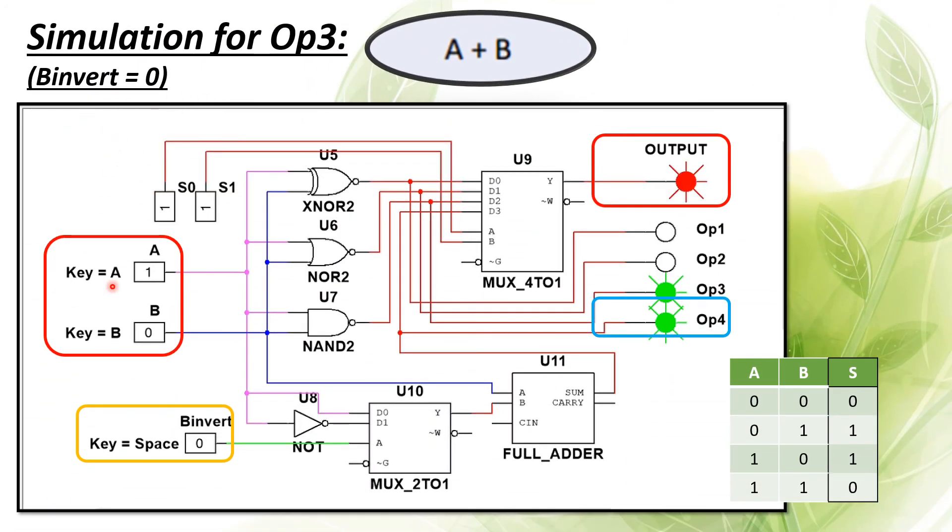For operation three with B invert equal to zero, which means we don't want to invert the input signal B, we will have the output signal that is the same as the addition operation, which will only output one when there is only one input is one and the other is zero. The output signal is verified to be correct.